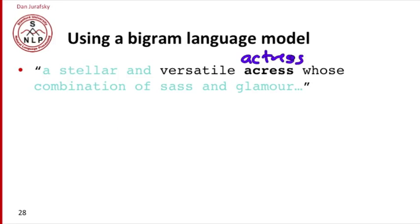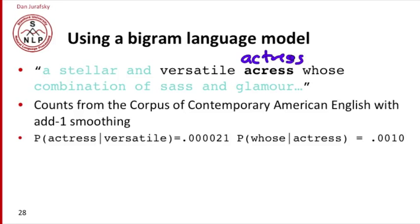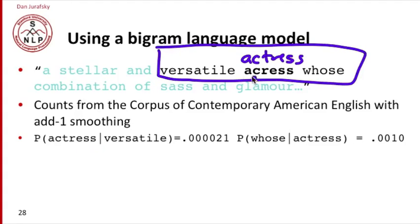Let's look at a bigram model. How well could we do with a bigram model? We computed a very simple bigram model just using add-one smoothing from the corpus of contemporary American English. Now, the probability of actress given versatile, just look at these three words. Actress given versatile, that probability is .00021. And whose given actress is .0010.